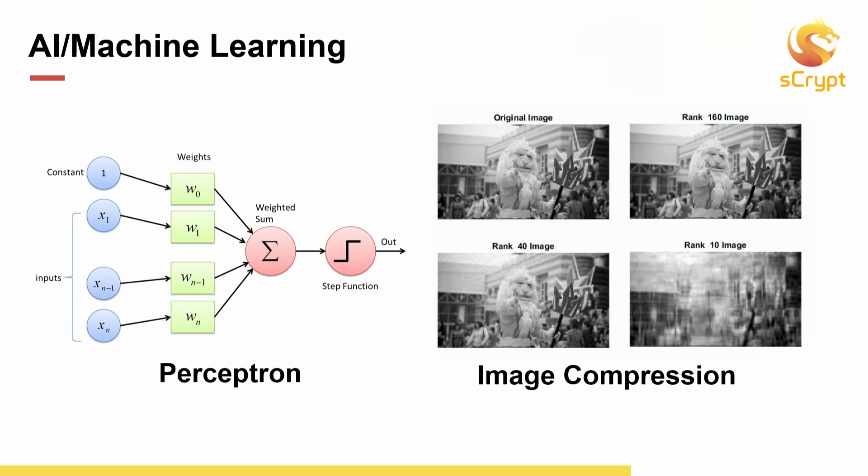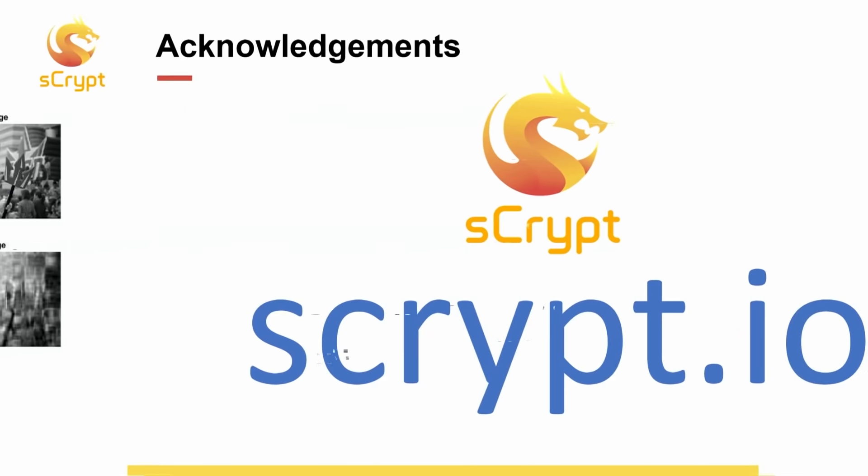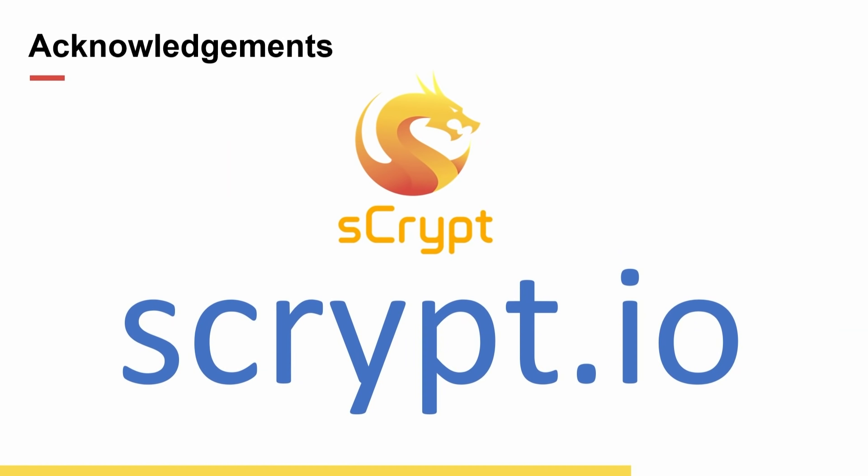We have implemented examples like lottery and tic-tac-toe, but this scheme can be generalized to any type of game. You can store your game state on chain. And also, we can train AI models and even machine learning models on chain as well and get paid for it.